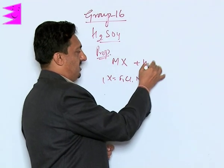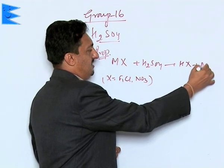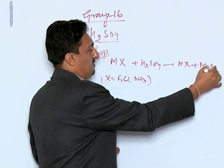When it is treated with sulphuric acid, what we find is HX and we get M₂SO₄.